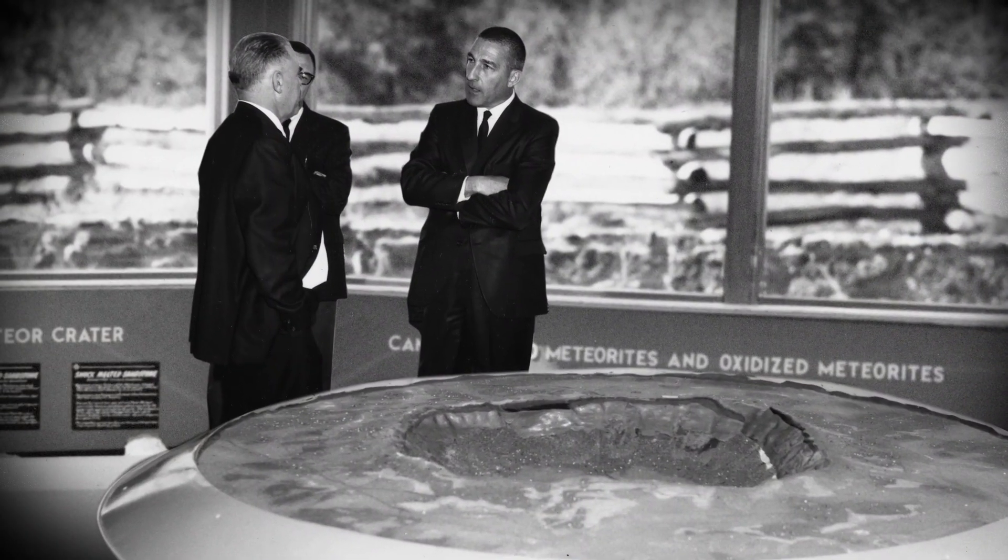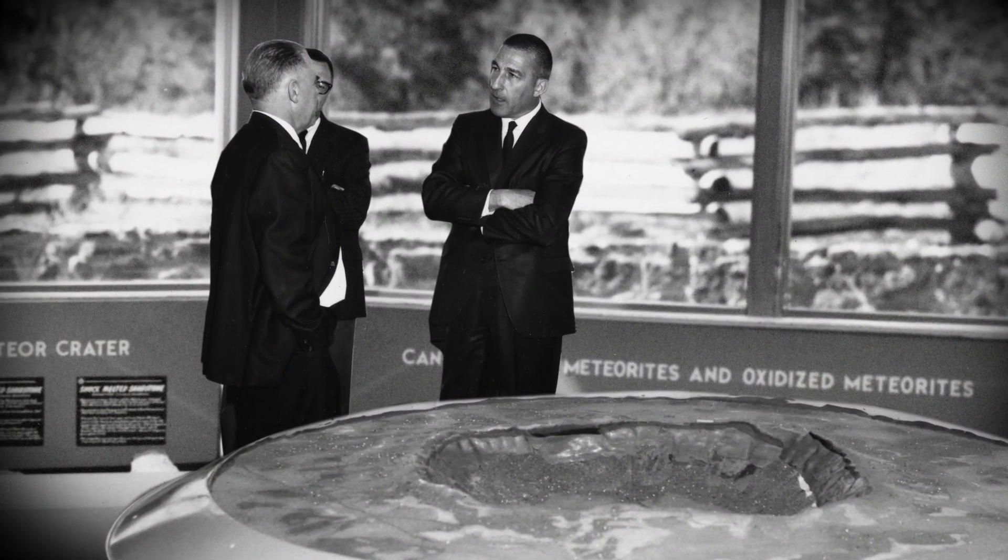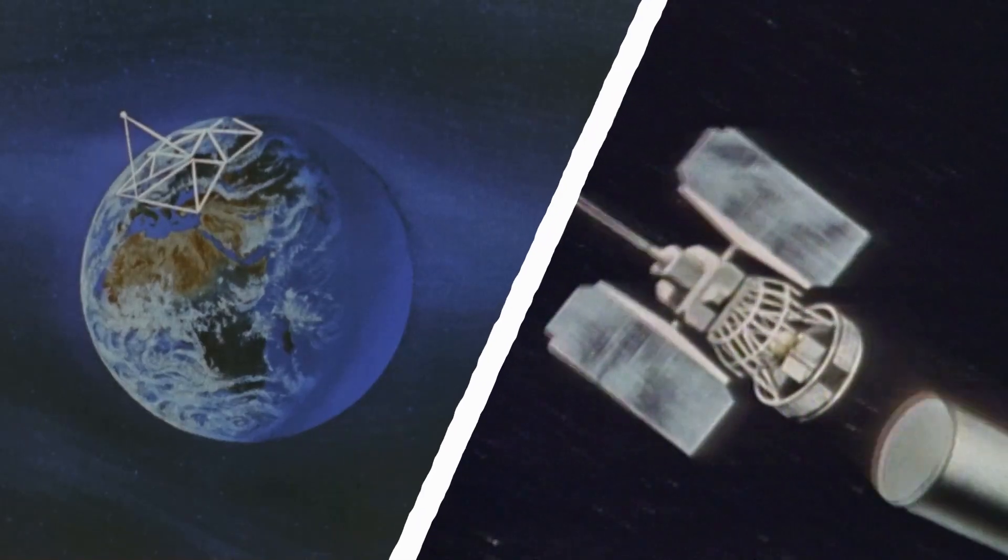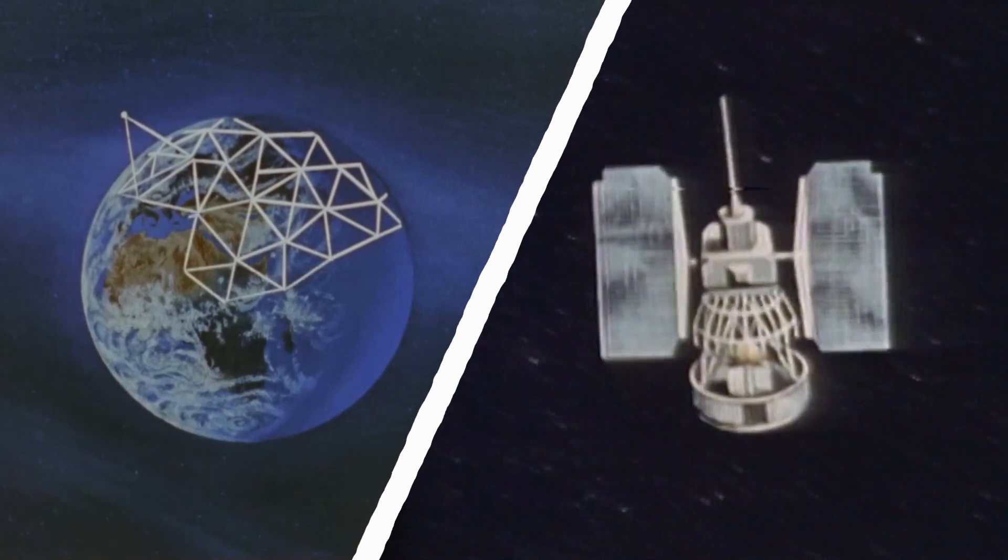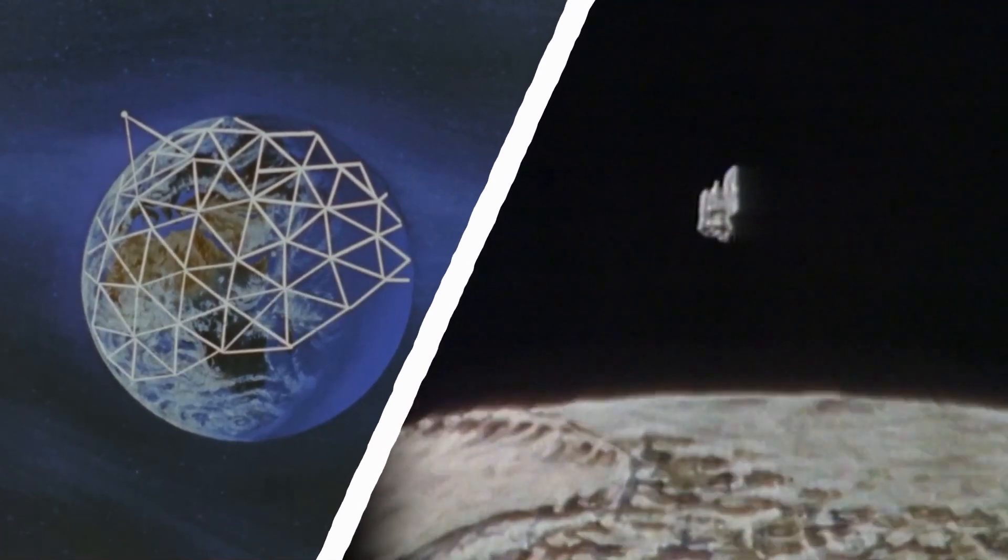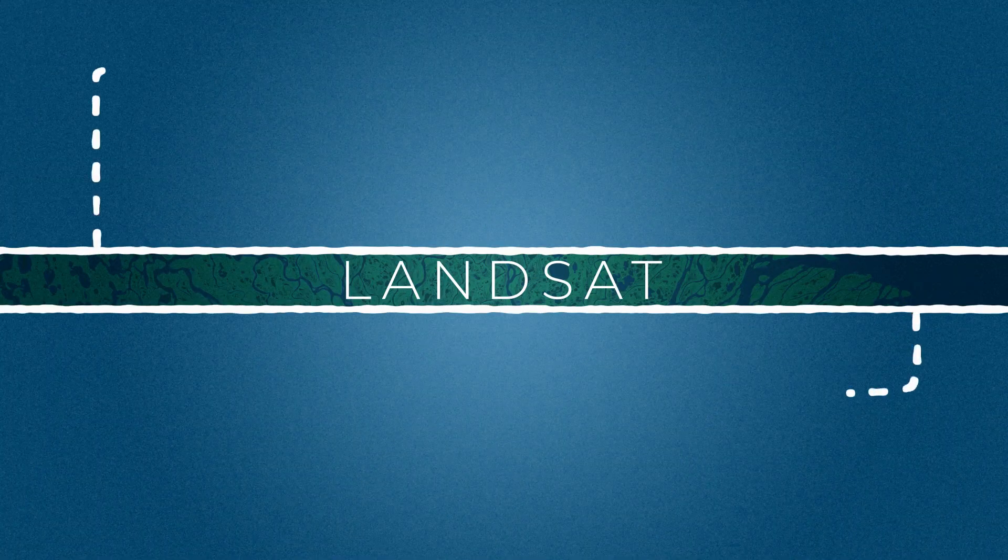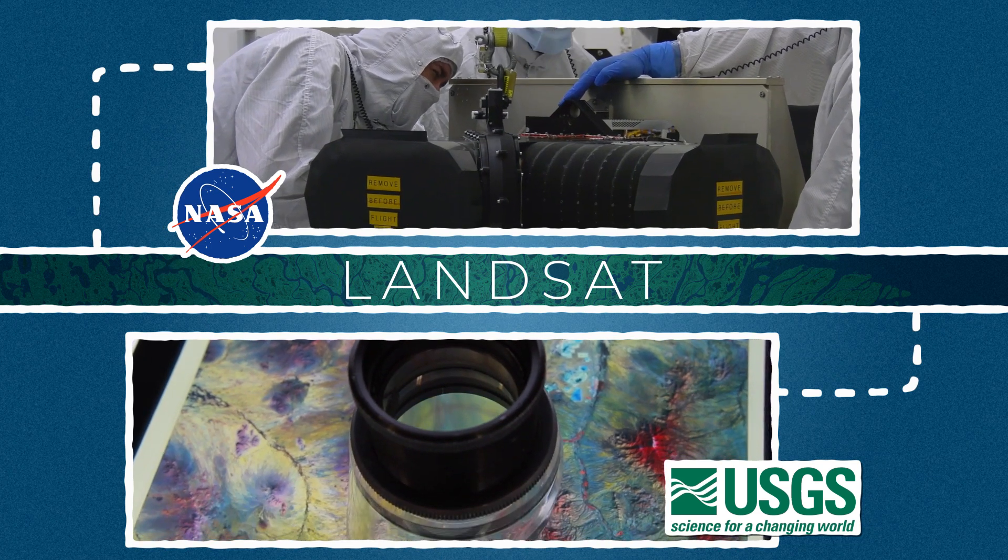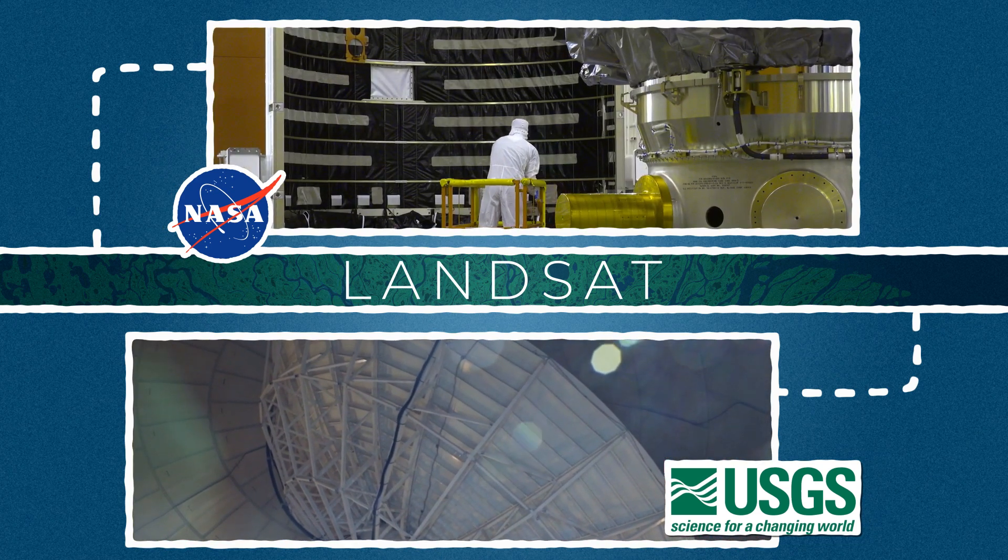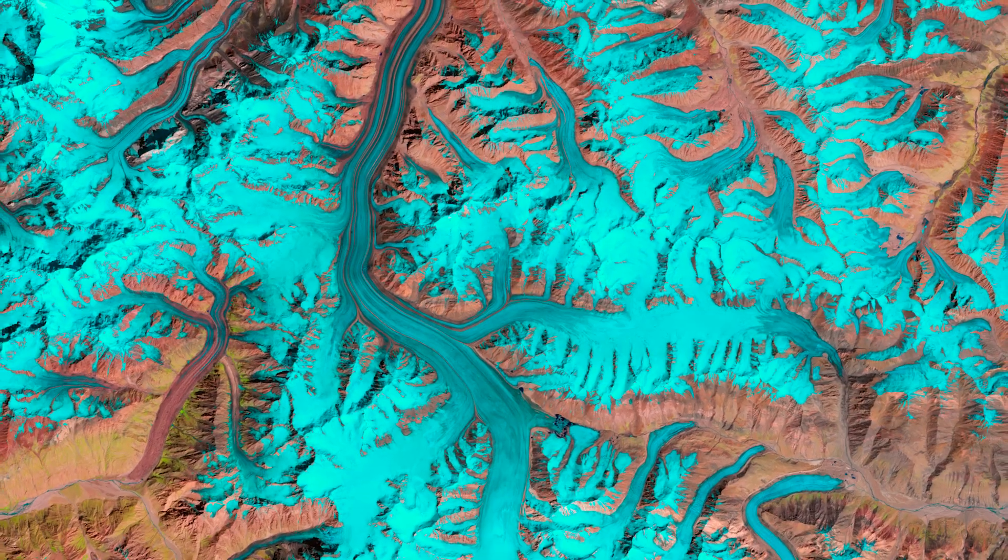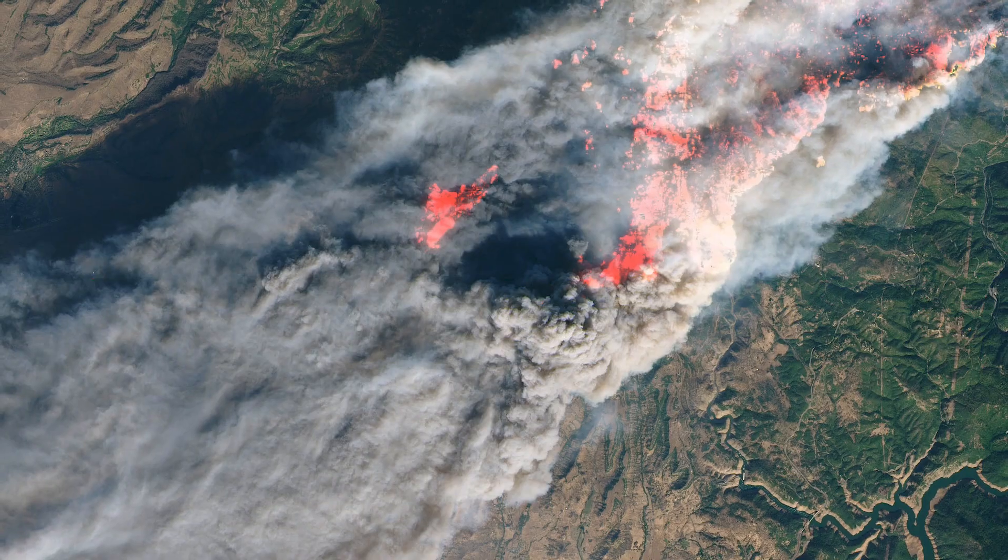50 years ago, the U.S. Geological Survey had an idea: satellites orbiting Earth that could help us monitor our natural resources. Today, the Landsat program is jointly managed by NASA and the USGS, providing an unparalleled record of Earth's changing landscapes for the benefit of all.